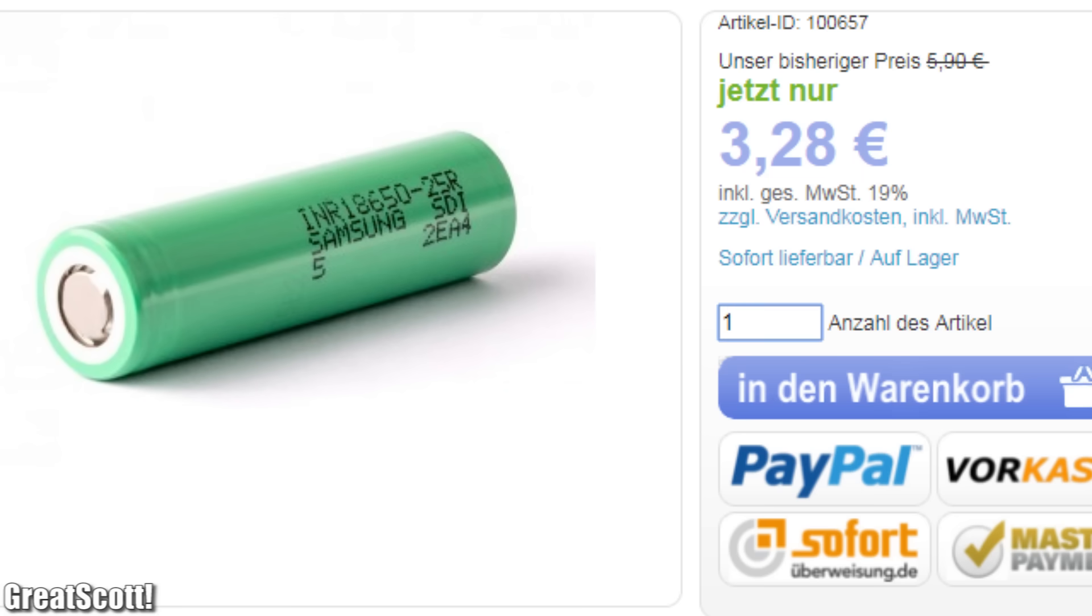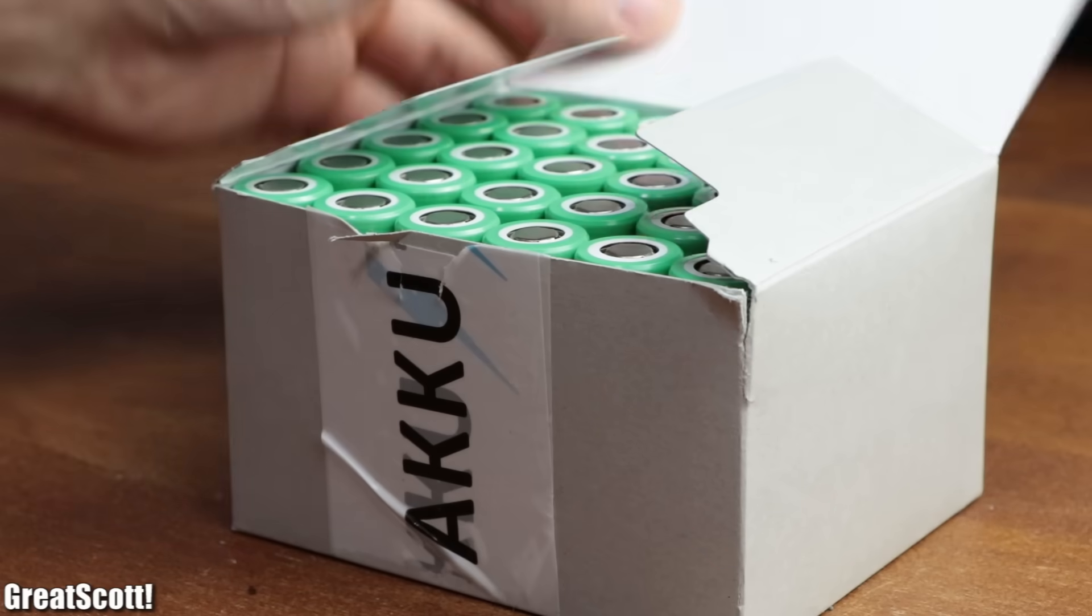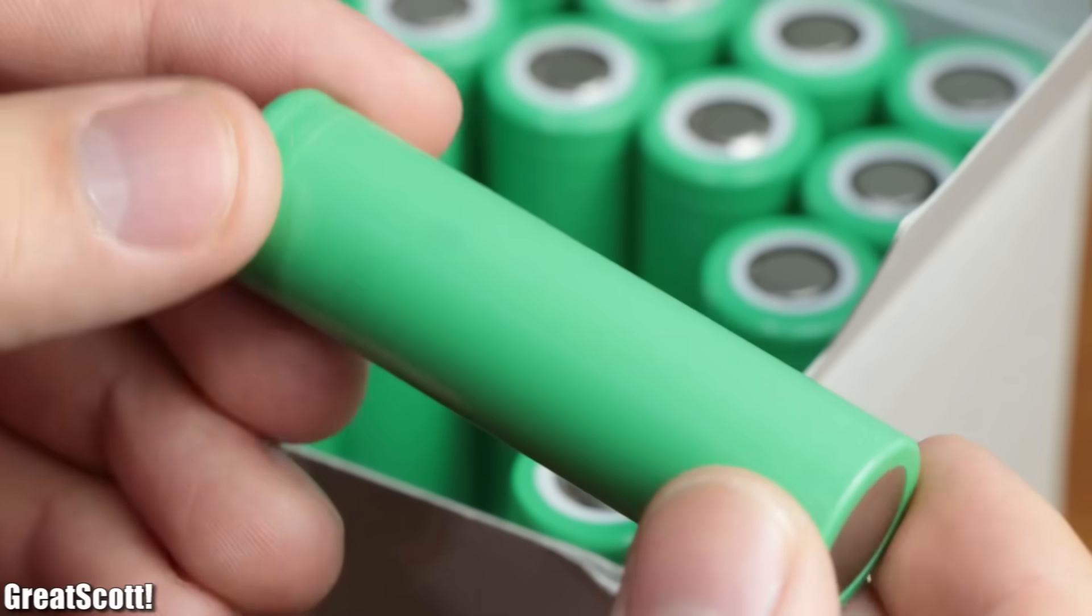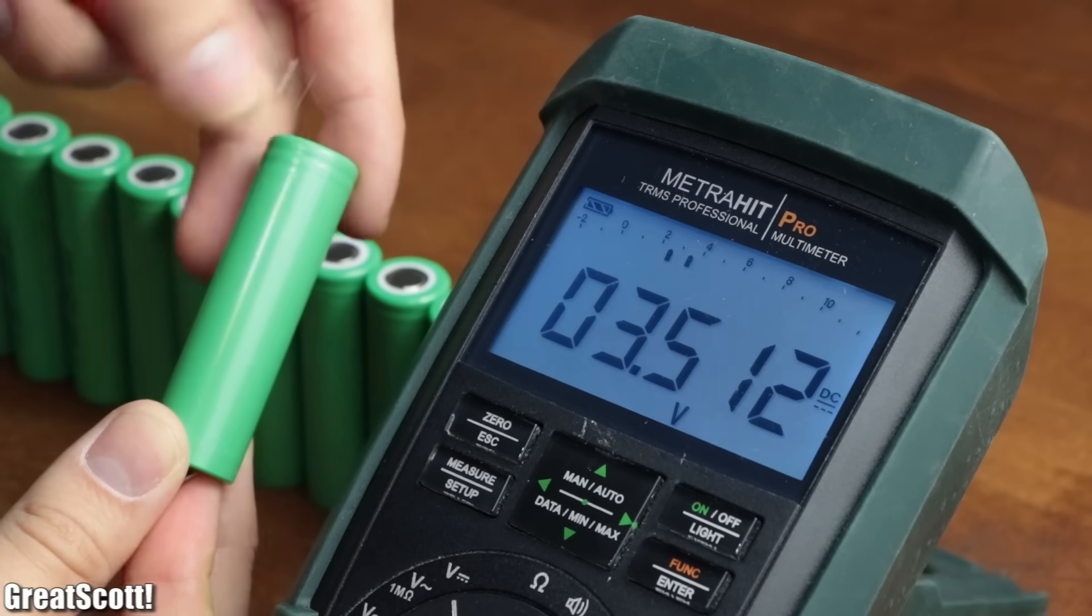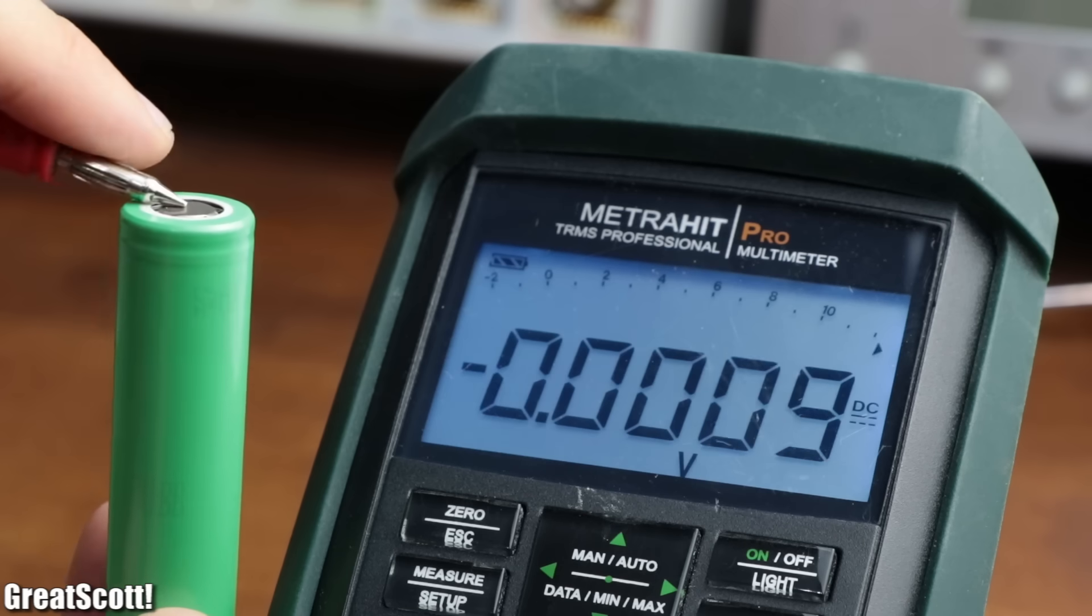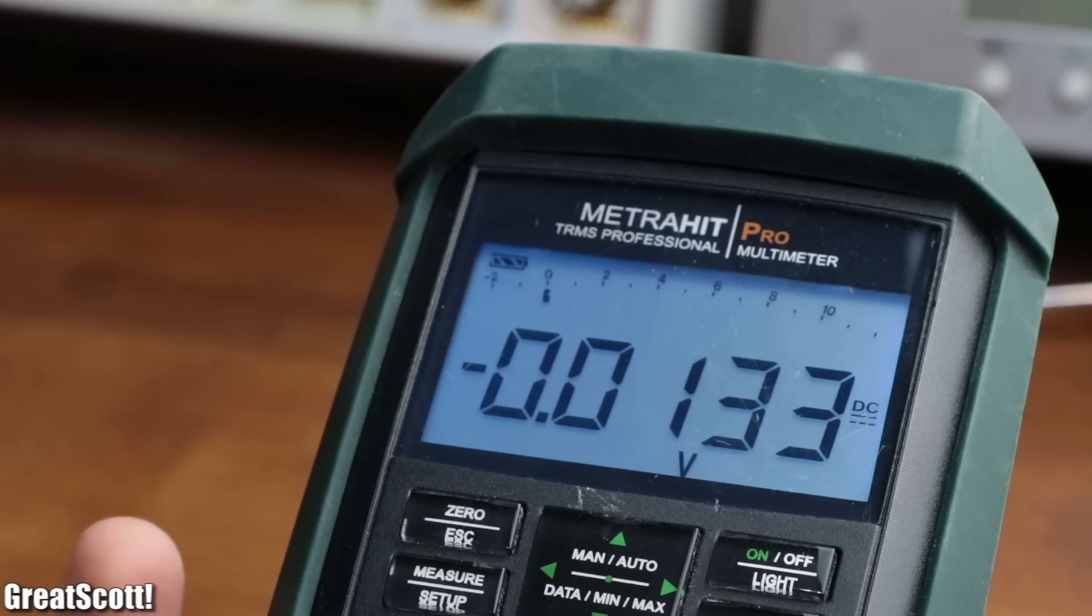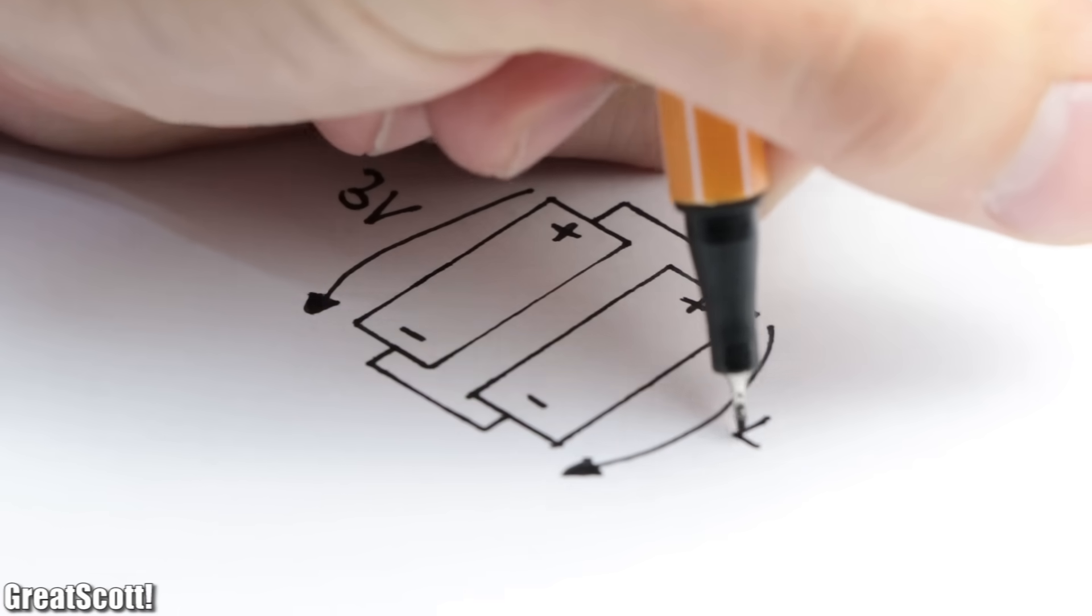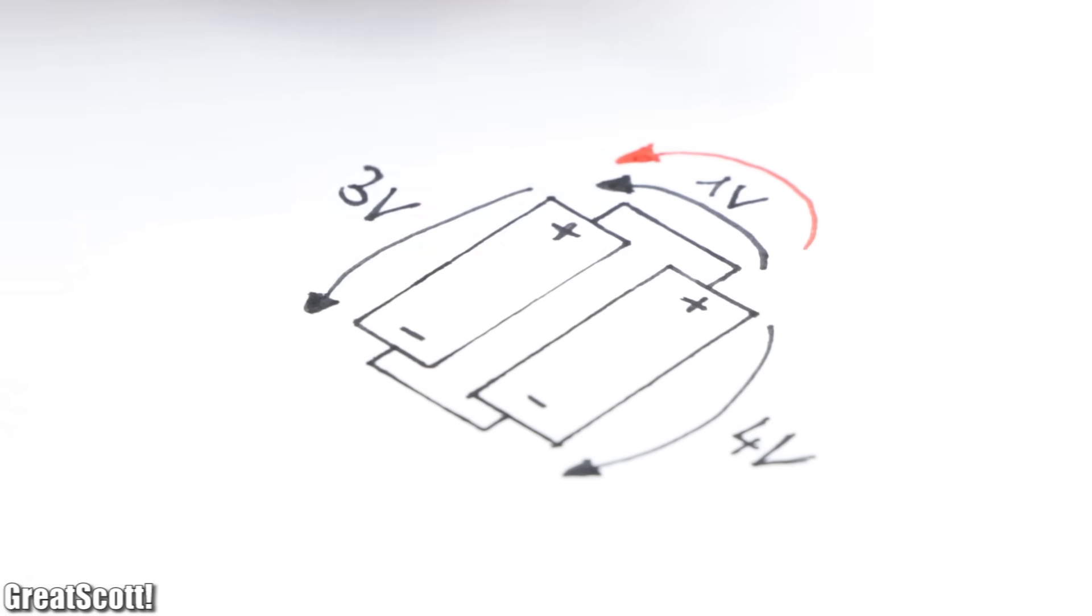So I went ahead and ordered 30 of those cells from a trustworthy German seller. How do I know that they are trustworthy? Well, after receiving the cells and visually inspecting them, I measured the voltage of all of them and noticed that they were all very close to one another, which was not only a very good sign but also indispensable since we want to connect two cells in parallel. If they would have a big voltage potential difference, a parallel connection could result in a large current flow and the destruction of a cell.